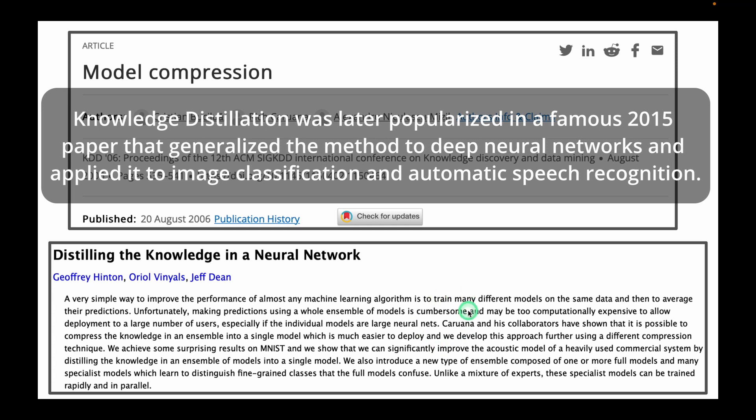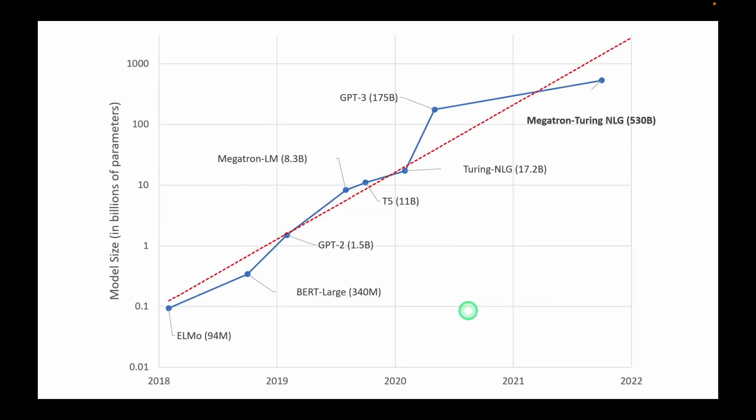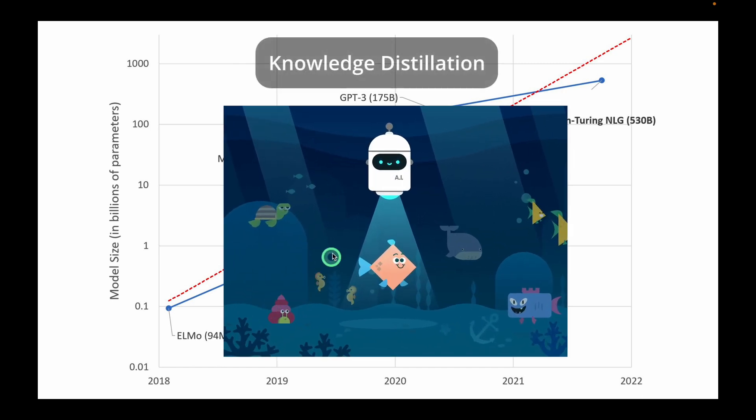As language models are being pre-trained with larger and larger parameter counts, there is a growing need to compress these models for practical use. Knowledge Distillation has emerged as a popular strategy to achieve this. It helps to compress these huge models and make them more suitable for building real world applications.